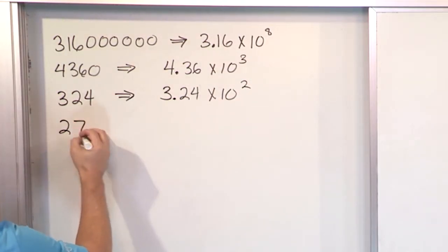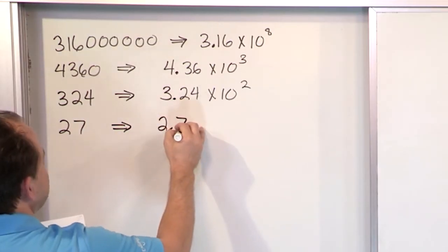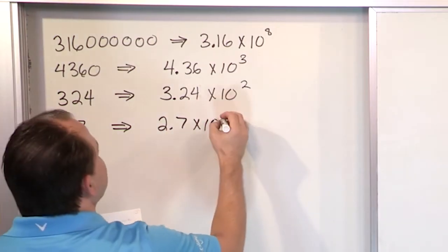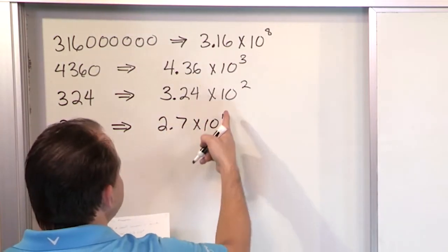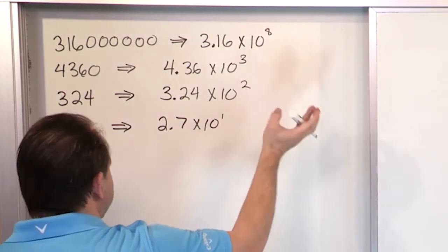And then finally, a simple number like 27. I would never use scientific notation, but I could: 2.7 times 10 to the what? If the decimal's here, I move at one spot, which means it goes times 10 to the one. Or you could just take the one out, because multiplying by 10 and 10 to the one is the same thing.